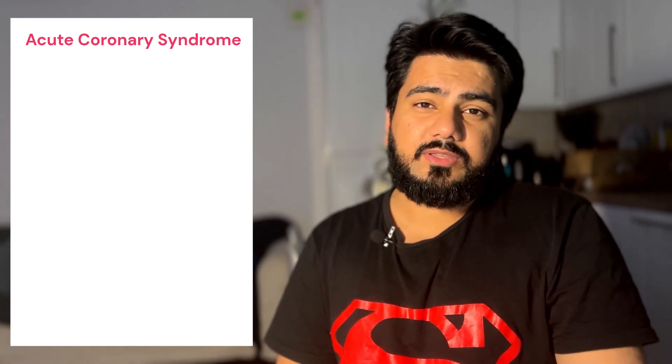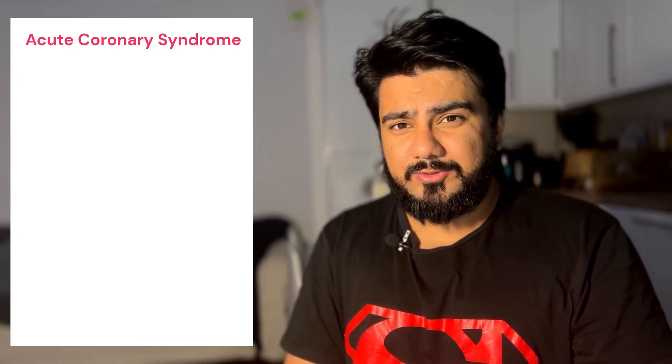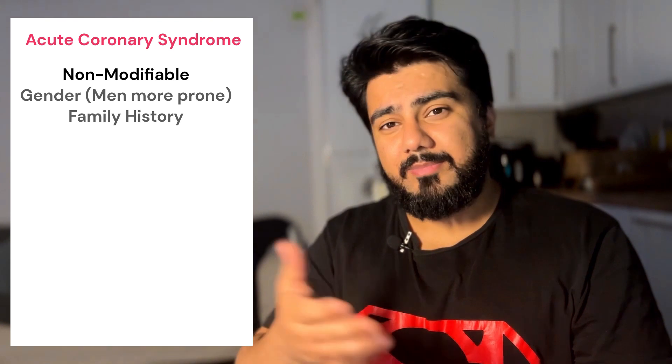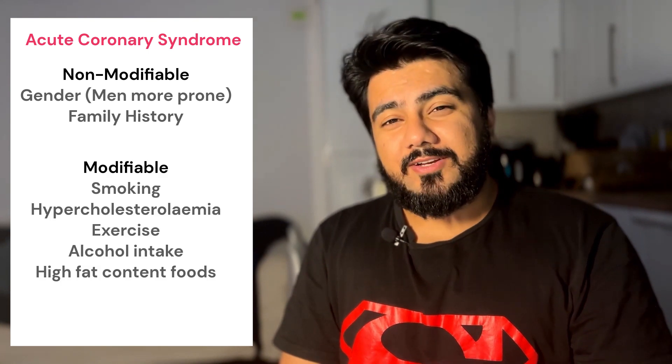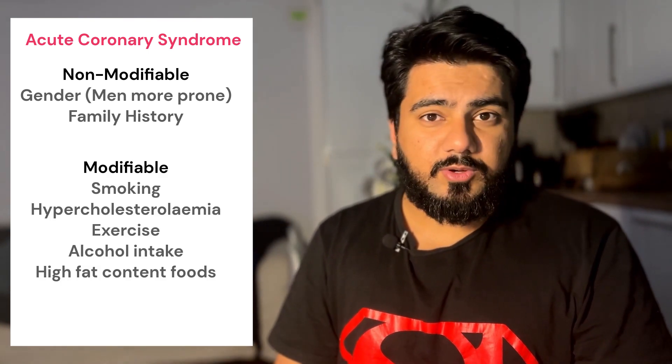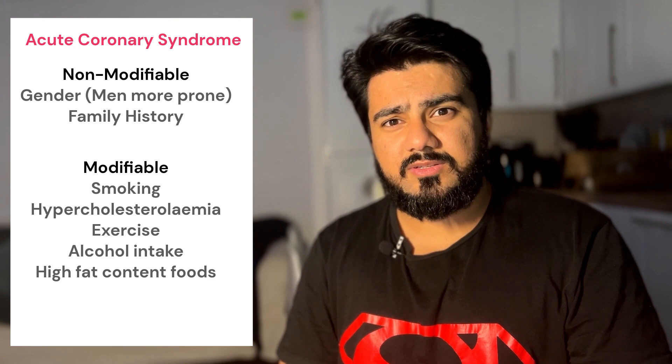The next section is very important after taking the pain history: identifying what kind of risk factors a patient has. Starting with acute coronary syndrome, ACS has two categories of risk factors. Non-modifiable risk factors include gender — male gender is more prone to ACS — and family history. Modifiable risk factors include smoking history, alcohol intake, hypercholesterolemia, sedentary lifestyle, amount of exercise, and diet.